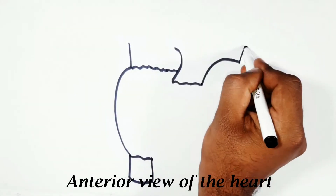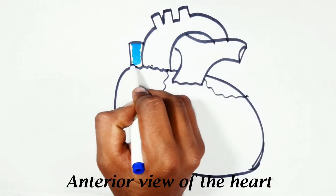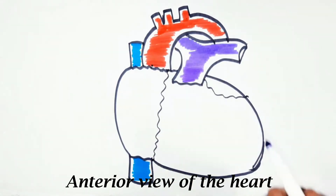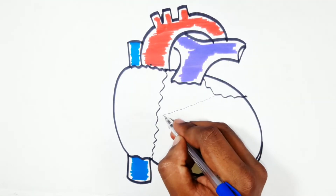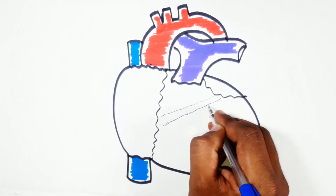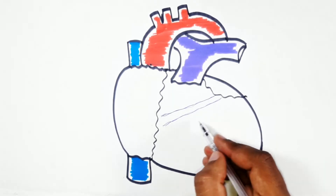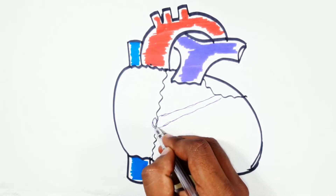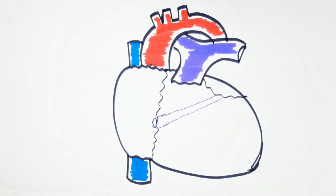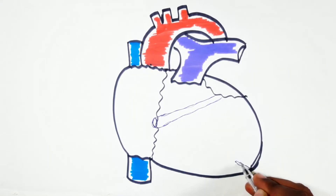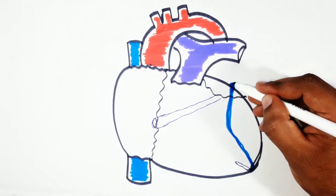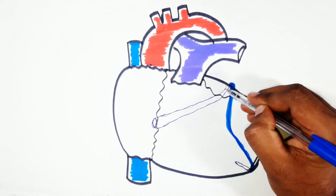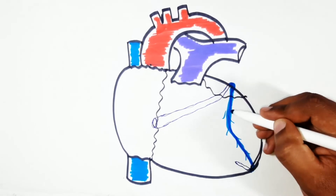The veins of the heart include the coronary sinus and its five tributaries. The coronary sinus is a wide vessel lying in the posterior part of the atrioventricular groove, covered by a thin layer of myocardium. It opens at its right end into the posterior wall of the right atrium, to the left of the inferior vena cava opening. The first tributary is the great cardiac vein, which accompanies the anterior interventricular artery and the circumflex artery, and enters the left end of the coronary sinus.